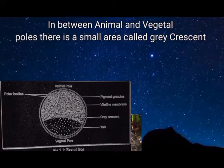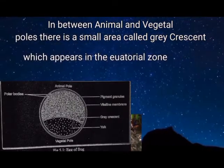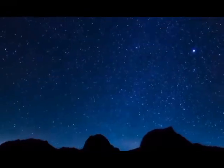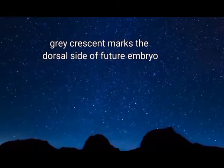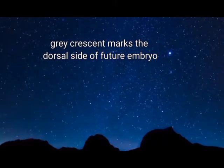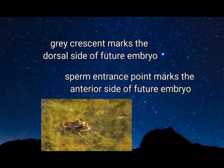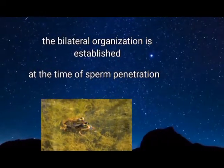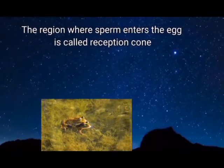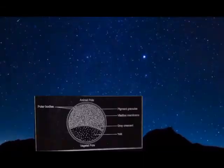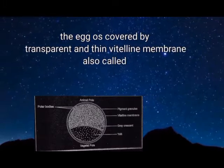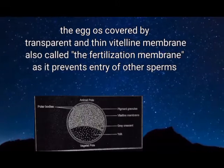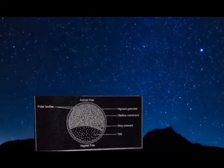Between the animal and vegetal poles there is a small area called the gray crescent. The gray crescent appears in the equatorial zone geometrically opposite to the sperm entrance and marks the dorsal side of the future embryo. The sperm entrance point marks the anterior side of the future embryo, and bilateral organization is established at the time of sperm penetration. The area where sperm enters the egg is called the reception cone. The egg is covered by a transparent and thin vitelline membrane, called the fertilization membrane, which prevents the entry of other sperms.